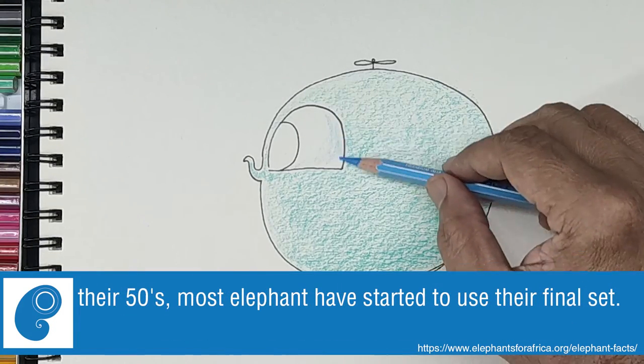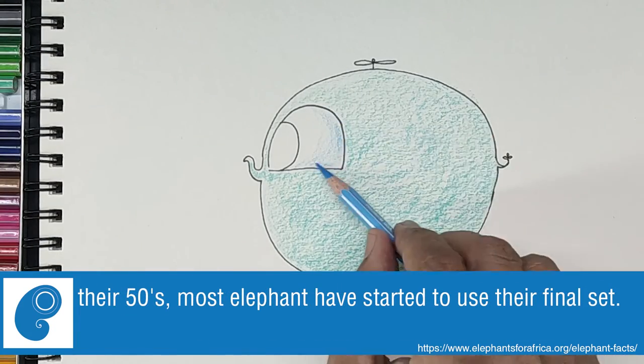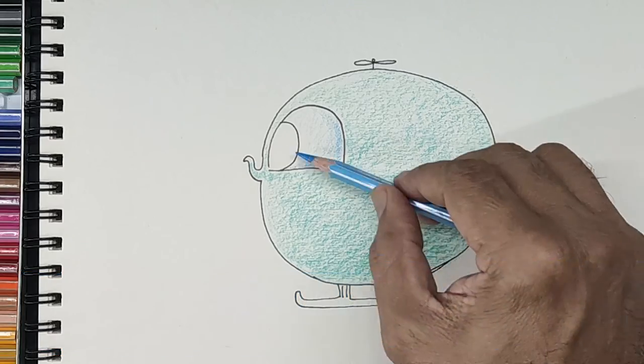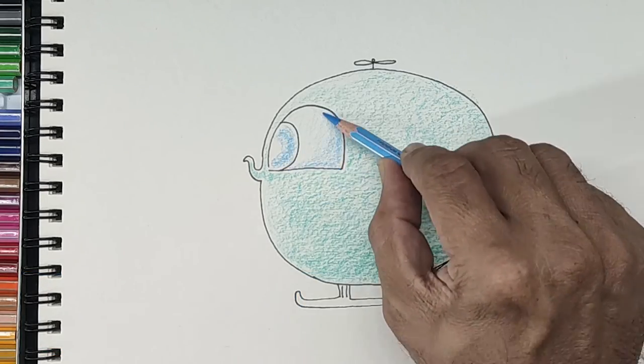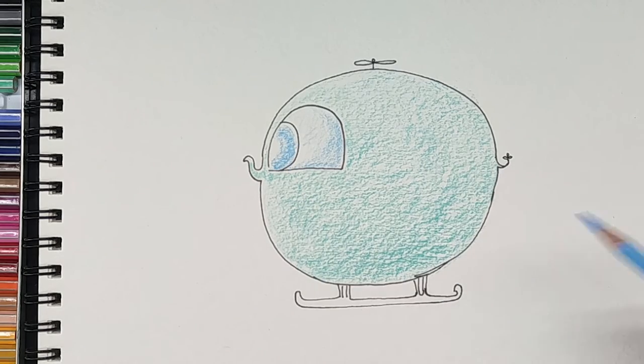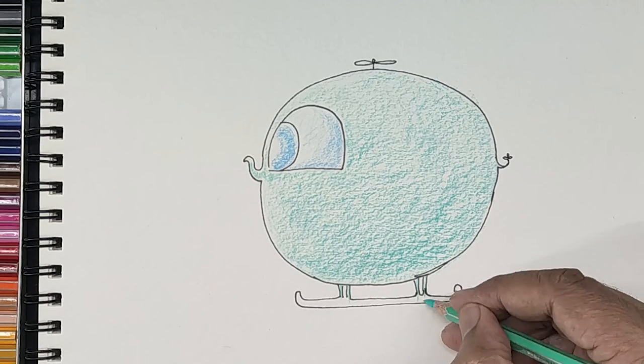Let us add a bit of blue here for the eye corners to get the glass effect. Let us now color the legs and the skids.